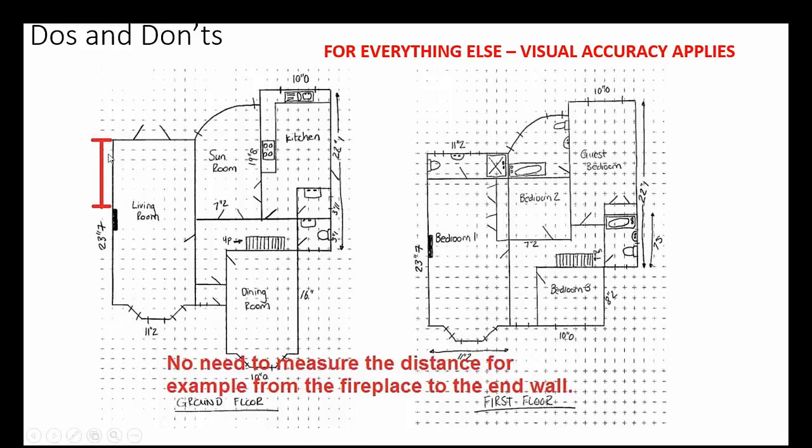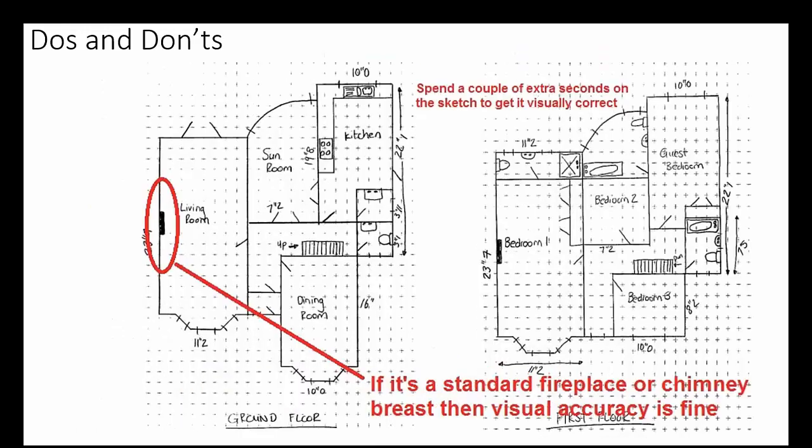Things like measurements from the fireplace to the end wall or the width of the double doors or how far they are from the end wall, don't need to worry about that at all. Visual accuracy is the key. So just spend a couple of extra seconds when you're doing the sketch to make sure it's visually correct.